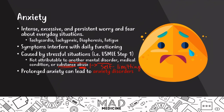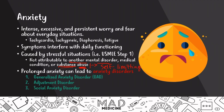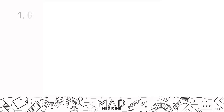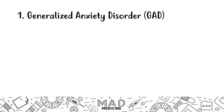There are four main anxiety disorders that you need to know about for the USMLE Step 1. The first one is generalized anxiety disorder. The second one is called adjustment disorder. The third one is called social anxiety disorder. And the fourth one is called panic disorder — but we're going to have a separate video for panic disorder by itself. So we're going to be discussing mainly these three disorders in this video today. With that being said, let's go ahead and start our discussion about generalized anxiety disorder, also known as GAD.